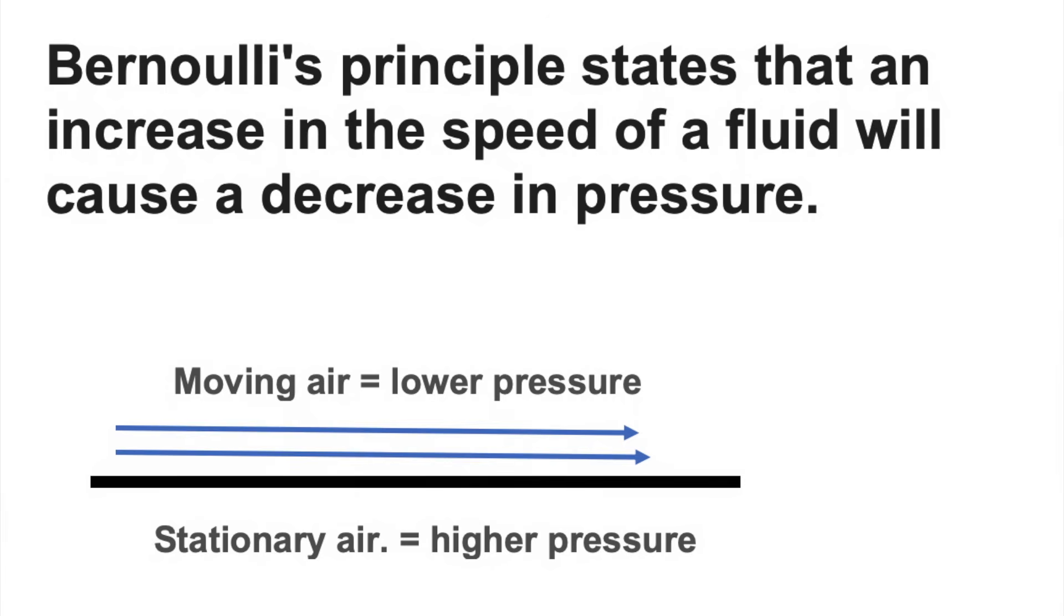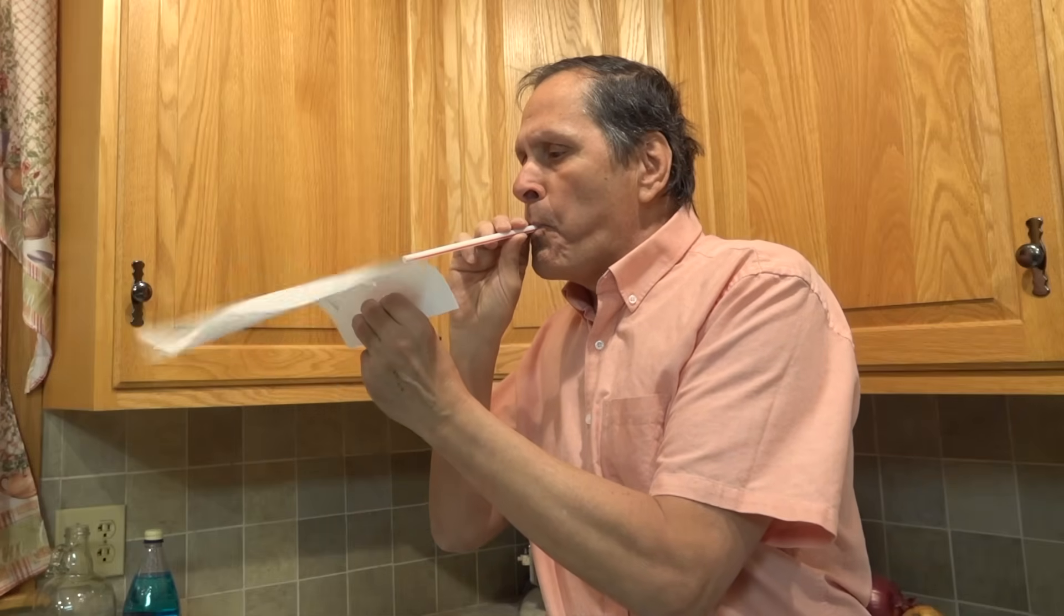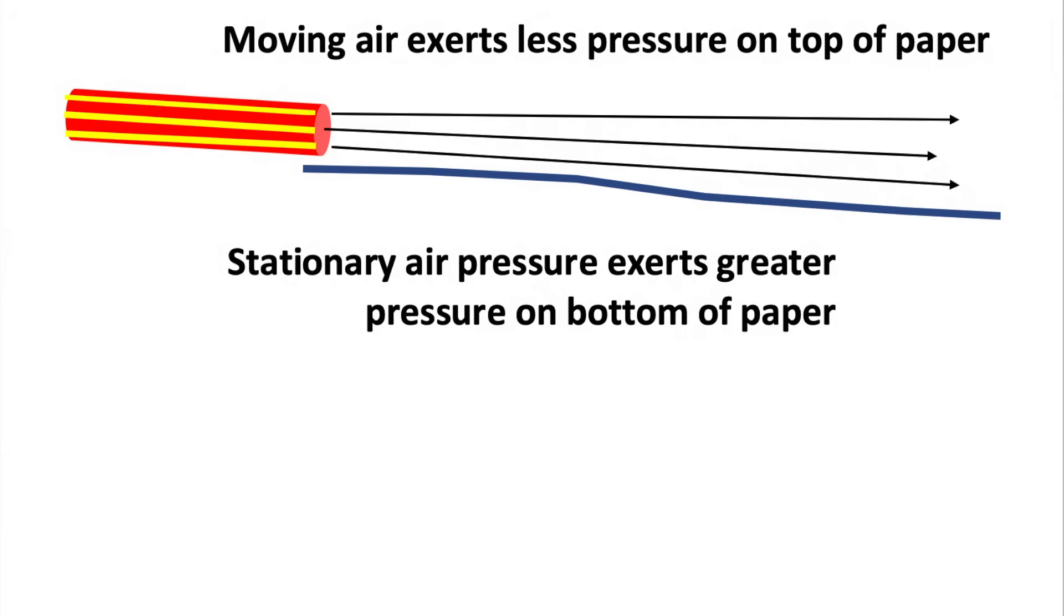Now, the movement of this cart is actually an example of Bernoulli's principle, which describes how the speed of a fluid actually causes a decrease in pressure. Something you can test at home. Try blowing air across a piece of paper. Moving air exerts less pressure on top of the paper, so the stationary air underneath it exerts enough pressure to lift it up.